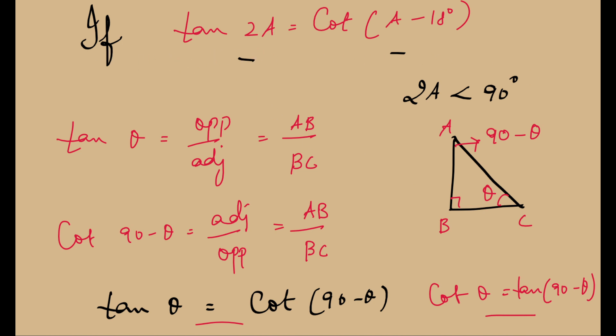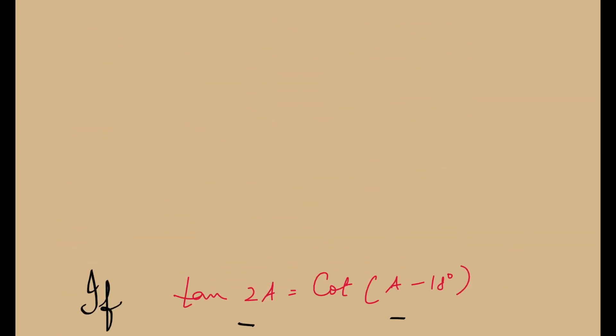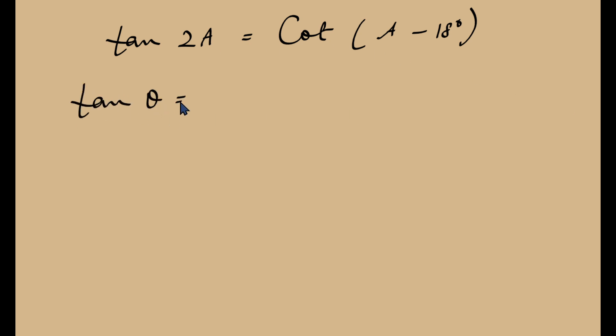Let us try to find what is A. Now, let me rewrite the problem here. Tan 2A, it has been given to us that tan 2A is equal to cot of A minus 18 degrees. Now, since we know the relationship between tangent and cotangent, let us use this: tan of theta is equal to cot of 90 minus theta.